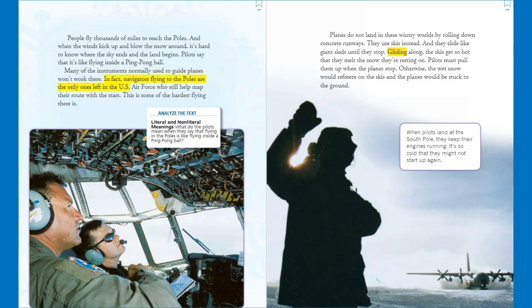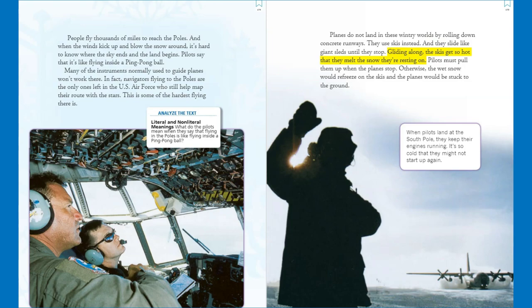Many of the instruments normally used to guide planes won't work there. In fact, navigators flying to the poles are the only ones left in the U.S. Air Force who still help map their route with the stars. This is some of the hardest flying there is. Planes do not land in these wintry worlds by rolling down concrete runways — they use skis instead and slide like giant sleds. The skis get so hot they melt the snow they're resting on, and pilots must pull them up when the planes stop, otherwise the wet snow would re-freeze on the skis and the planes would be stuck to the ground.